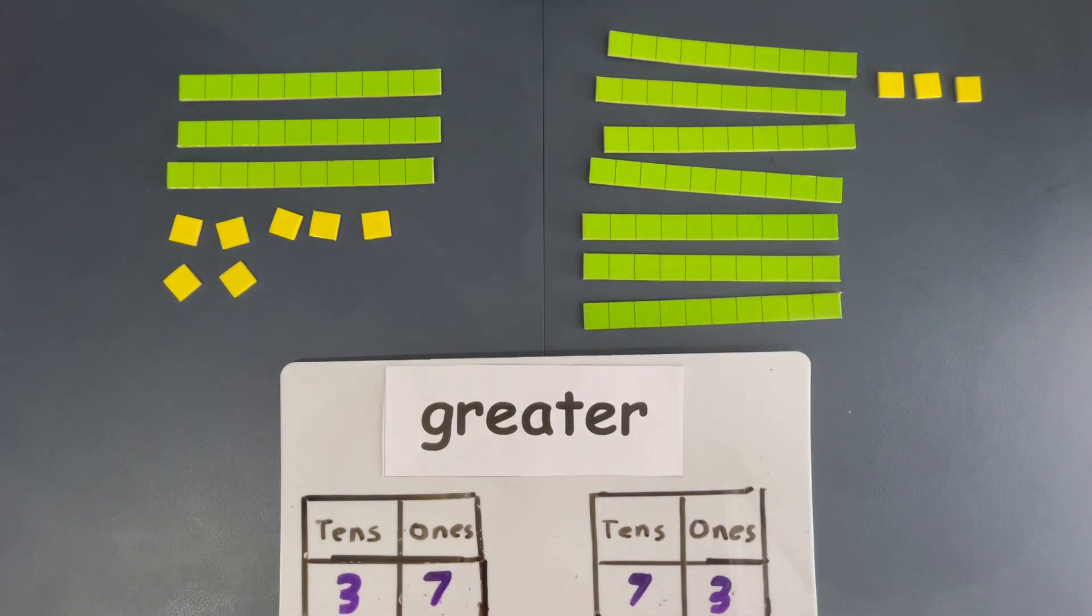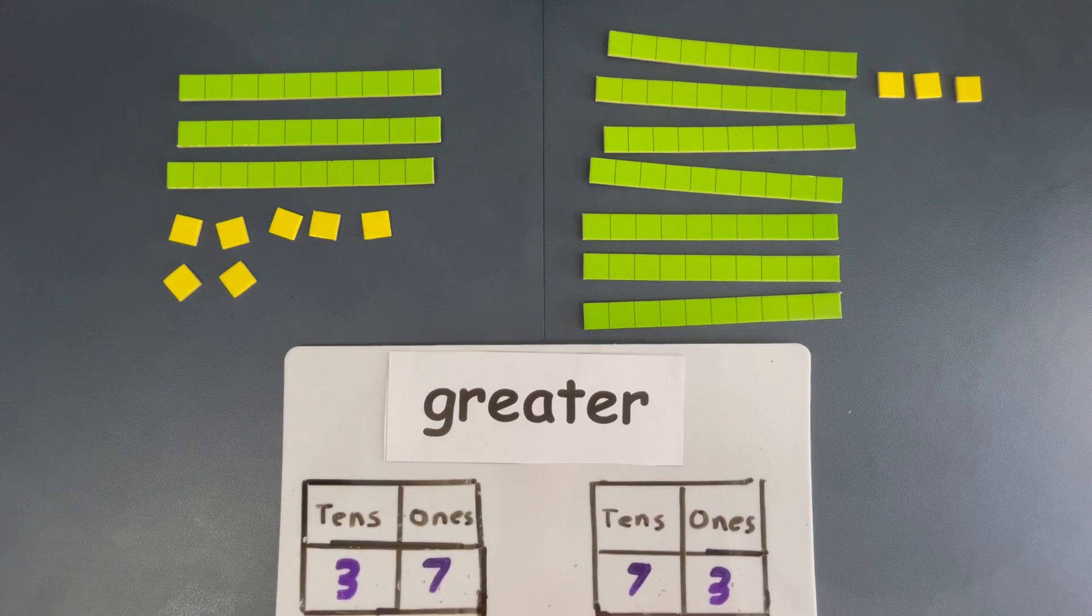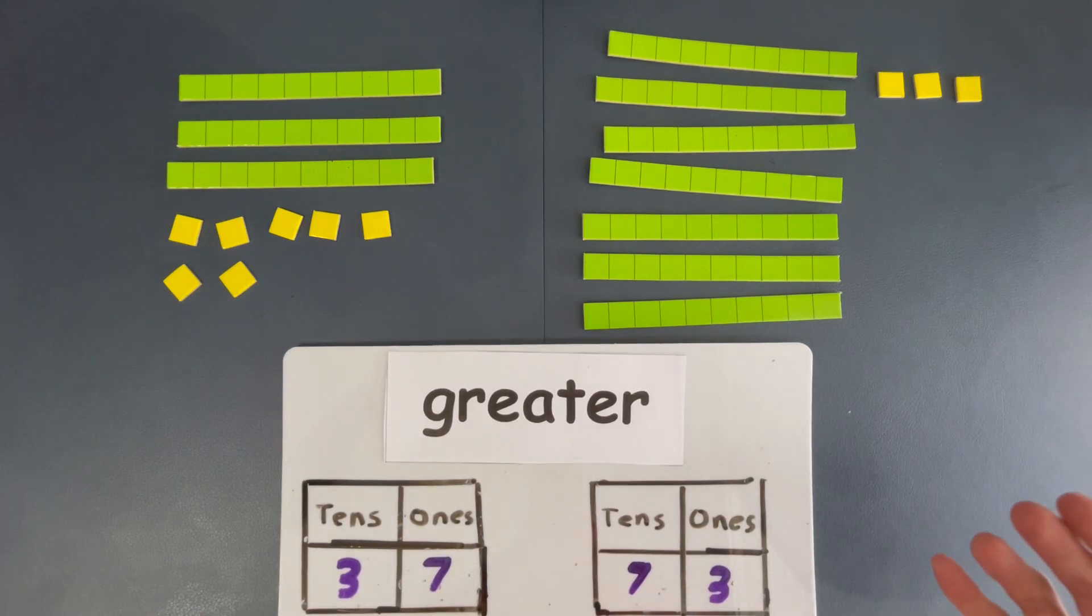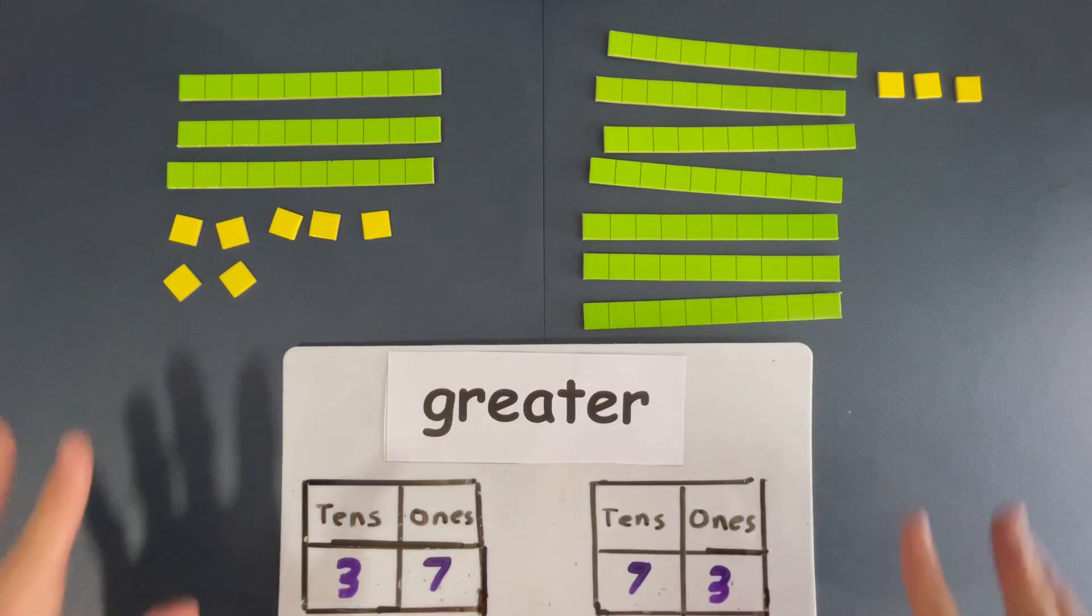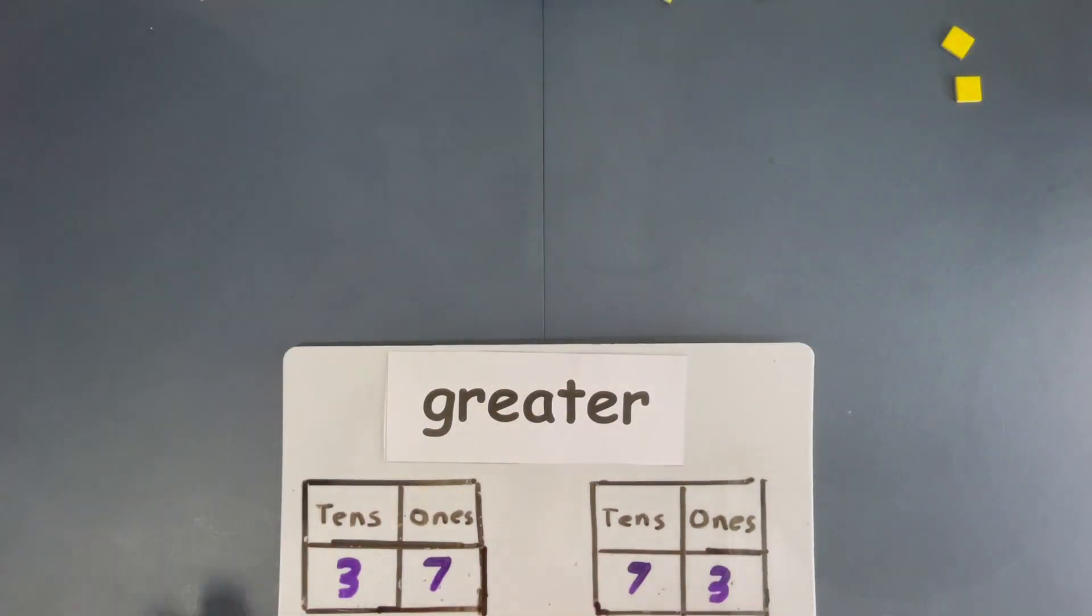You already can see, right? You can see which one is greater. Which one has more? Which one is greater? It's 73. And it's very clear once you look at the tens, the number of tens. So, let me show you a shortcut. Okay?